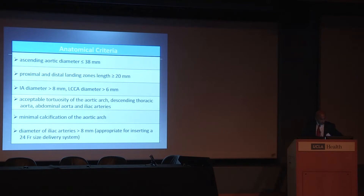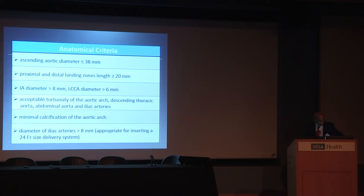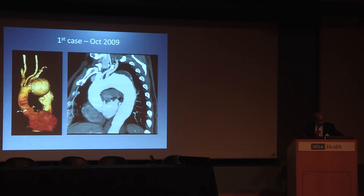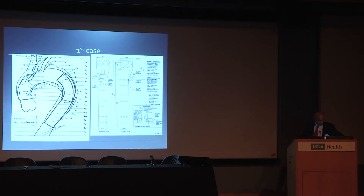Cook has done a good job of keeping within inclusion criteria: the ascending aortic diameter must be less than 38 millimeters, otherwise you may not be dealing with a normal ascending aorta, which could lead to mid- to long-term problems. The proximal and distal landing zones requirement of 20 millimeters is being pretty chintzy — you really need more than that with these kinds of grafts, especially in the ascending aorta. Minimal calcification is preferred because stroke is really one of the Achilles heels of these procedures.